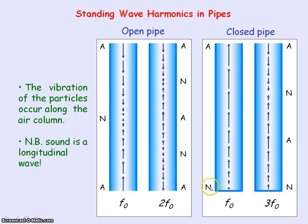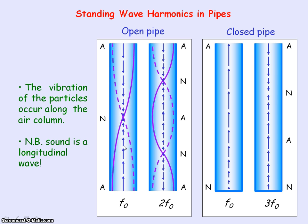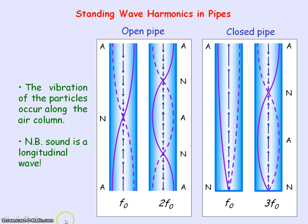These diagrams show, for the first two harmonics of the open pipe and the first two harmonics of the closed pipe, the direction of the vibrations alongside the standing wave patterns. You can see at certain points we are getting the nodes where the air particles are not vibrating, and at the open ends we are getting maximum amplitude. The arrows pointing upwards represent positive amplitude.